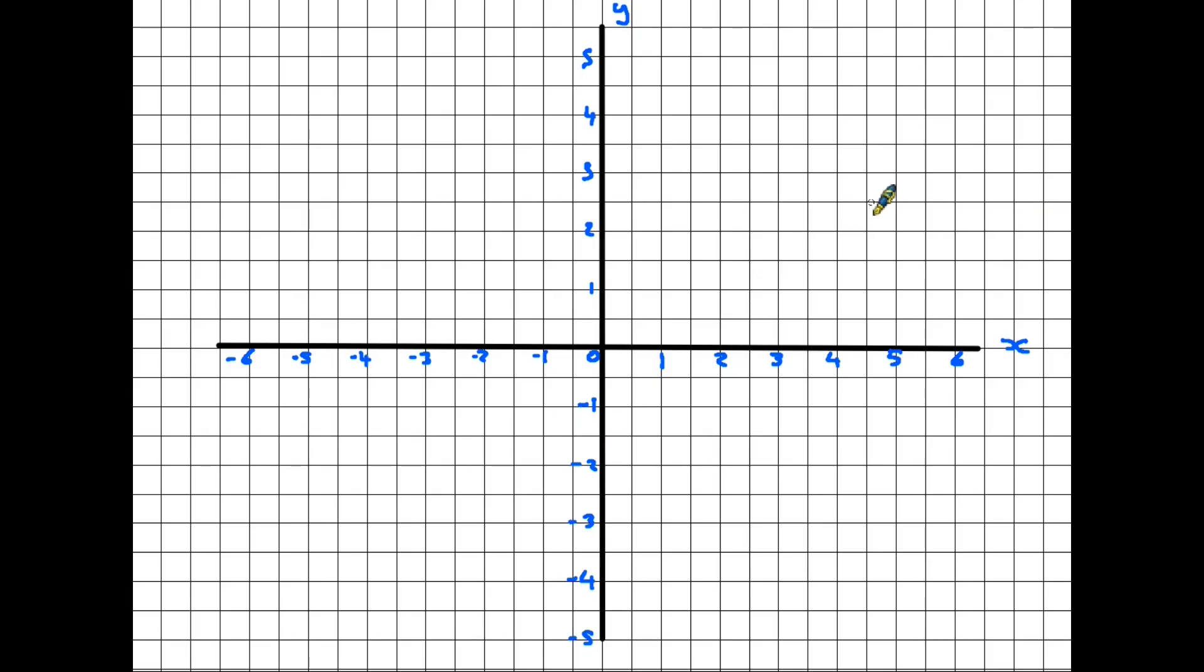I think it's best that we start by looking at all the basic features of a graph. So here we have a typical graph on a grid. The two lines, well the first is horizontal and this is known as the x-axis. The second, the vertical line at the center, is our y-axis and you can see both axes have a scale which can differ from graph to graph.